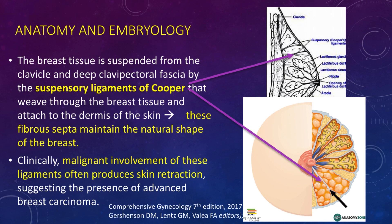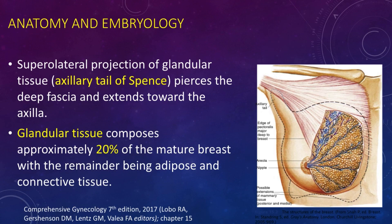Clinically, malignant involvement of the Cooper ligaments often produces skin retraction when a patient has a malignant tumor in the breast. The superolateral projection of the glandular tissue, which we call the axillary tail of Spence, pierces the deep fascia and extends toward the axilla.